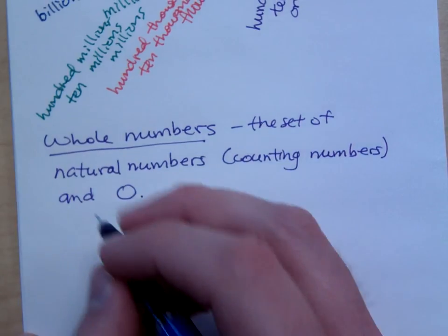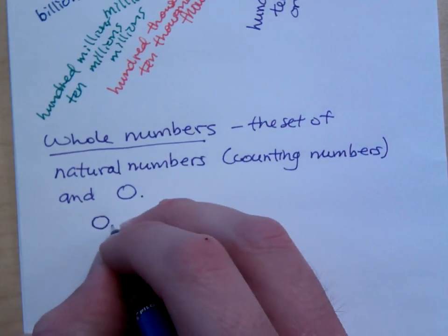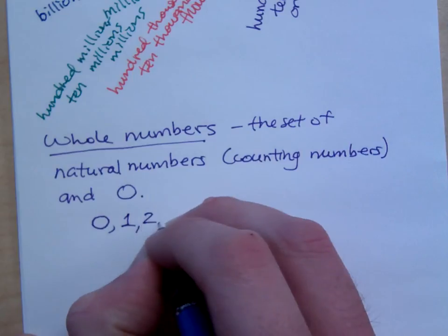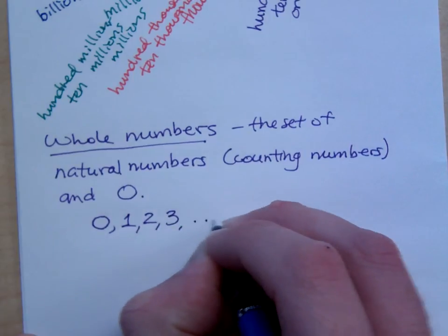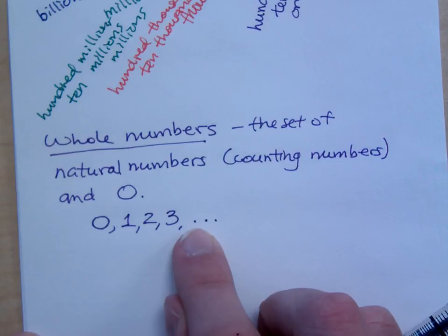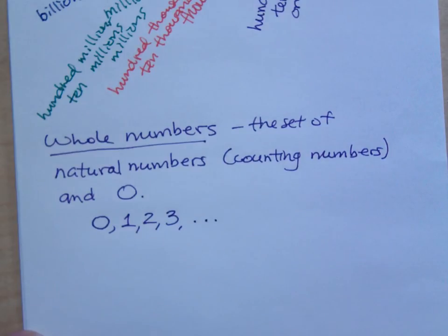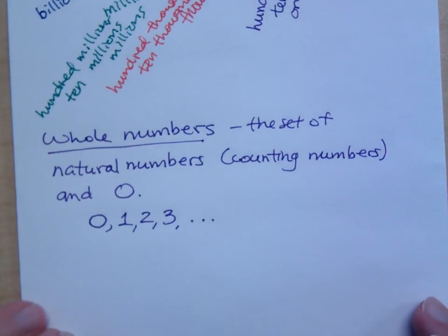So when I look at the whole numbers, you have zero, one, two, three, and then so on. We'll use the ellipsis here to show that it just continues on in that same pattern. And a little bit later, we'll talk about how we take these whole numbers and we create integers. So whole numbers are these numbers that you deal with every single day, whether you're dealing with zero or any of the counting numbers.